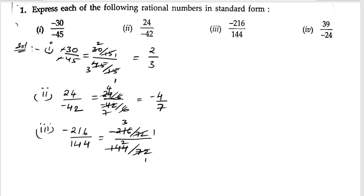Next, fourth bit: 39 by minus 24. The HCF is 3. 3 ones are 3, 3 thirteens are 39, 3 eights are 24. So minus 13 by 8. These are the standard forms of the rational numbers.